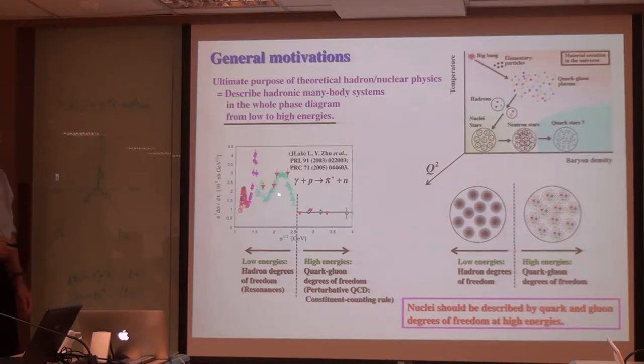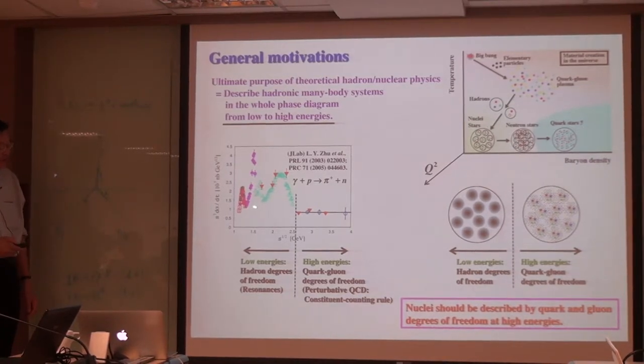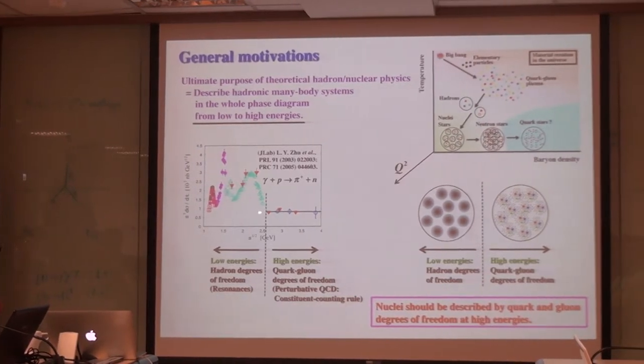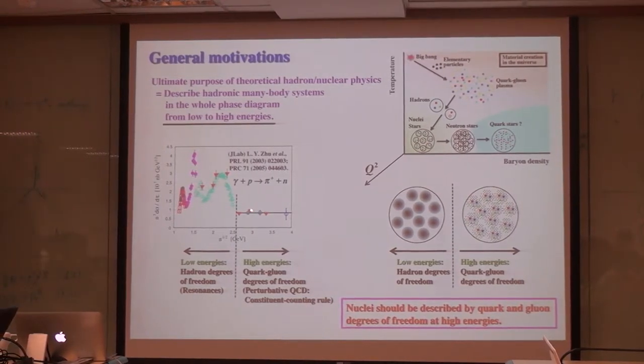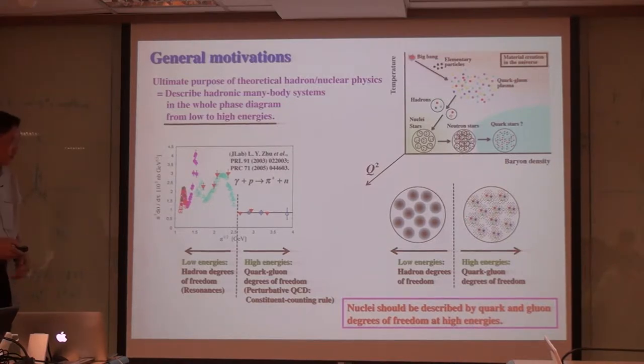For example, this is the famous Jefferson Laboratory result together with other electron facilities. The abscissa is the center of mass energy, and the ordinate is the cross section scaled as S to the 7th. At low energy, we typically observe resonance-like structure. But on the other hand, at high energy, we have the so-called constituent counting rule predicted by perturbative QCD.